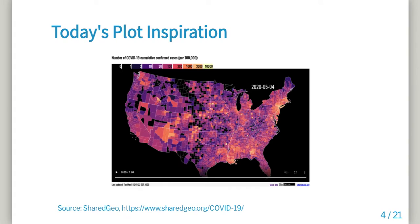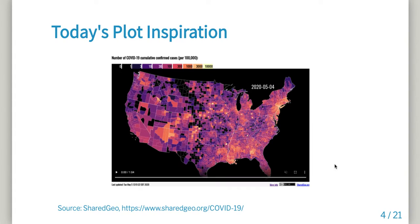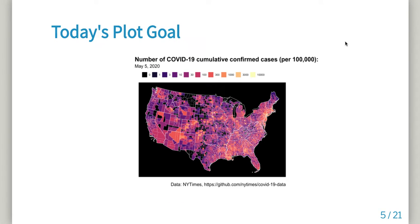This is our plot inspiration for today — a choropleth map from Shared Geo showing the number of cumulative cases, showing it on May 4th. This is an animated plot and I have the code in the background to show you how to do that, but we're not going to focus on that piece today. What we're going to do is figure out how to take county-level COVID case data in the U.S. and map our county-level spreadsheet data into this. And here's what we're going to come up with in the end — pretty close, using straight ggplot, taking this data for May 5th.